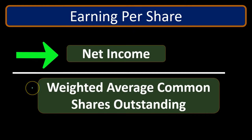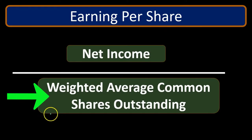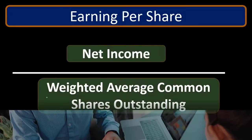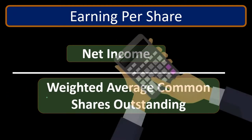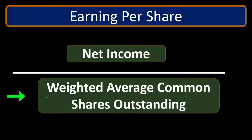What this means is we're taking net income — which is the performance of the company over the time period, whether that be a month or a year — and dividing it by the shares outstanding. We have the weighted average because we're trying to find out how many shares are outstanding on average through the time period. If there were no new shares issued, we would calculate this by taking the shares at the beginning of the time period and the shares at the end, adding them together and dividing by two.